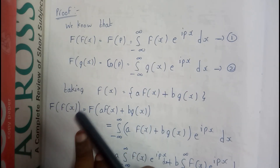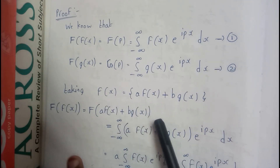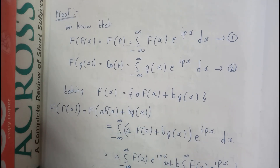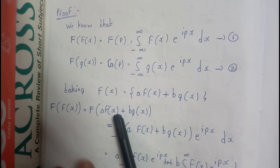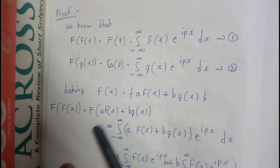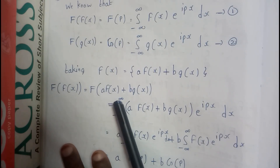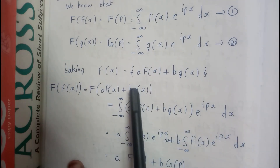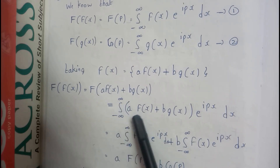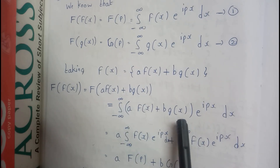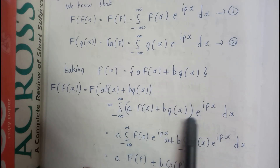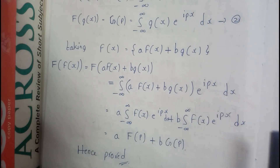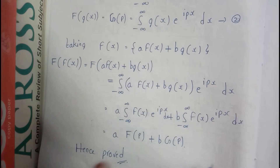Now let us assume that capital F of x equals a times f of x plus b times g of x. This is what we want to prove. So the Fourier transform of capital F of x equals the Fourier transform of a times f of x plus b times g of x, which means in place of f of x I substitute this whole equation: integral from minus infinity to infinity of a times f of x plus b times g of x, times e to the power ipx dx.